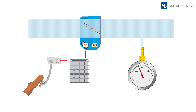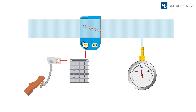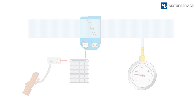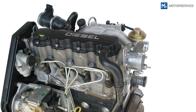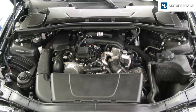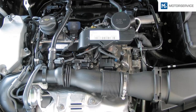Vacuum pumps are installed in vehicles that do not have sufficient vacuum. Conventional diesel engines are fitted as standard with a vacuum pump, as they have no throttle and cannot, therefore, generate any vacuum. Vacuum pumps are also increasingly found in petrol engines, where there is insufficient vacuum in the intake manifold after the throttle valve.